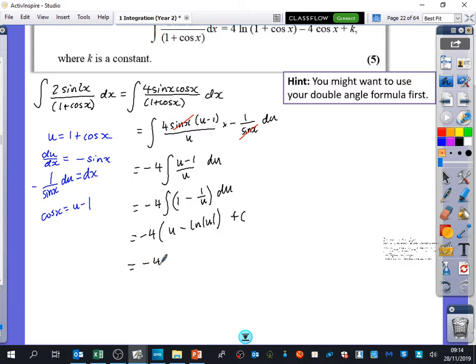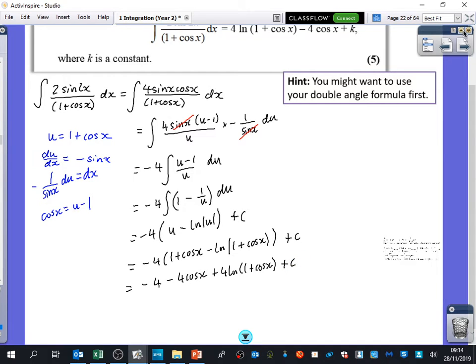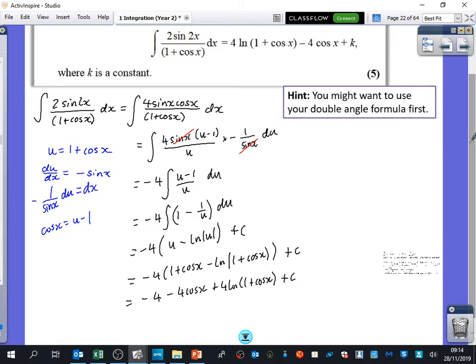But u is 1+cosx minus ln of 1+cosx, and we've still got the plus c. So you get minus 4 minus 4cosx plus 4ln of 1+cosx plus c, and then we'll just compare that to what we've got in the question. So we've got the 4ln(1+cosx), that's the thing that we've got there. We've got the minus 4cosx, but they've got a plus k here, because you've got the minus 4 times the 1.